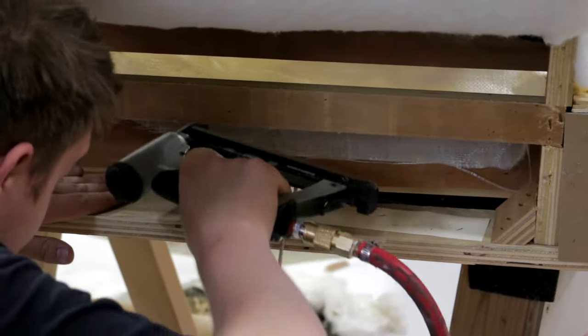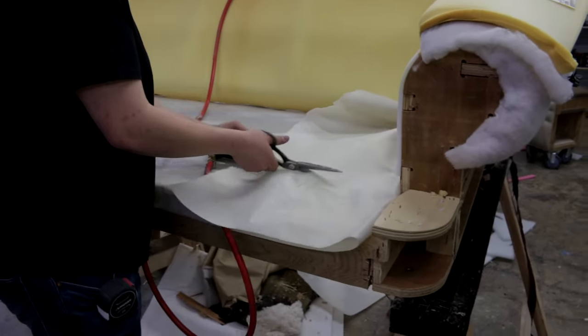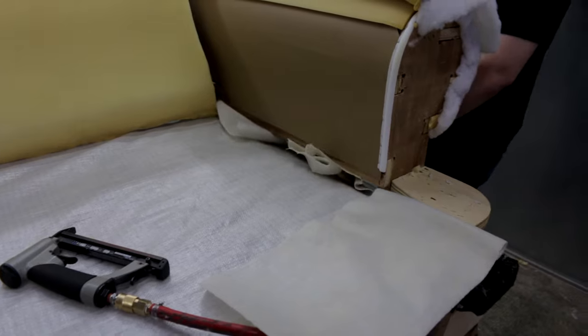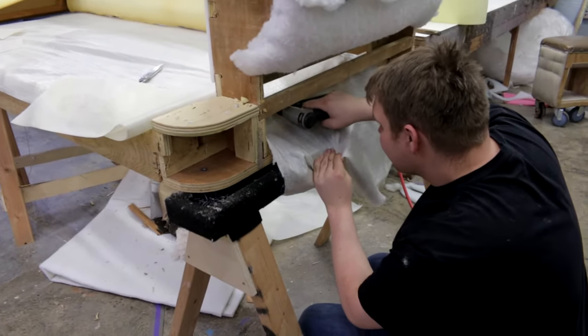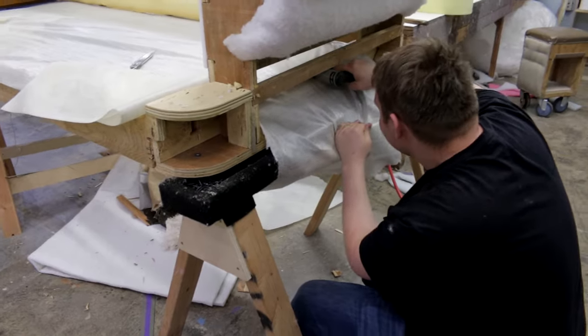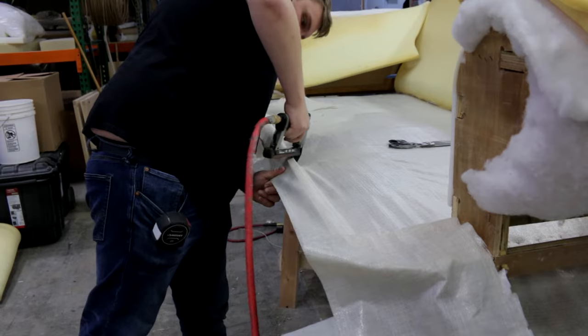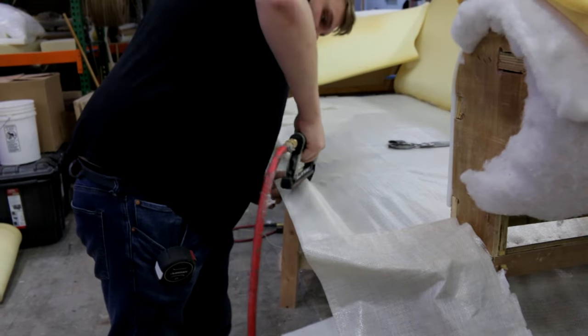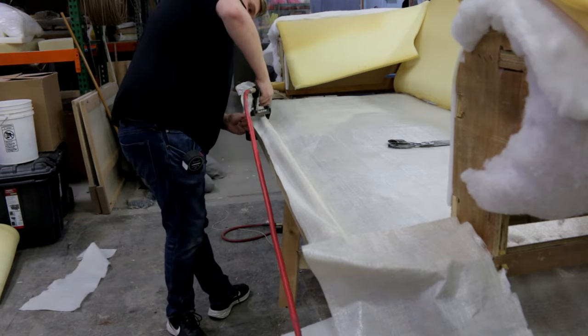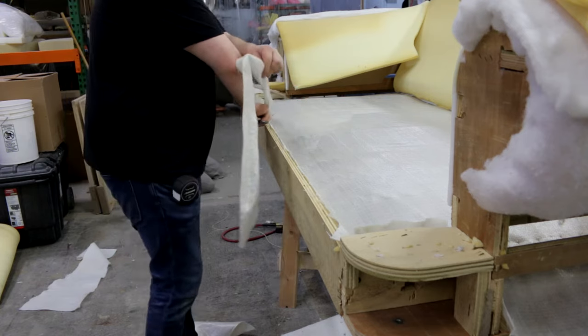Again, pull as tight as you can, staple it down before you trim and put the excess down as well. Finally, you'll trim the excess and staple down the remaining edge.